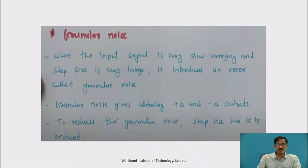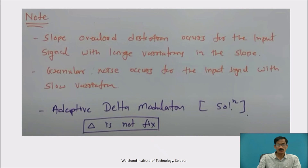Granular noise occurs when the input signal is very slowly varying and the step size is very large, introducing an error called granular noise. Granular noise gives alternating positive and negative outputs. To reduce granular noise, the step size has to be reduced. Slope overload distortion occurs due to input signals with large variations in slope, whereas granular noise occurs for input signals with slow variations.